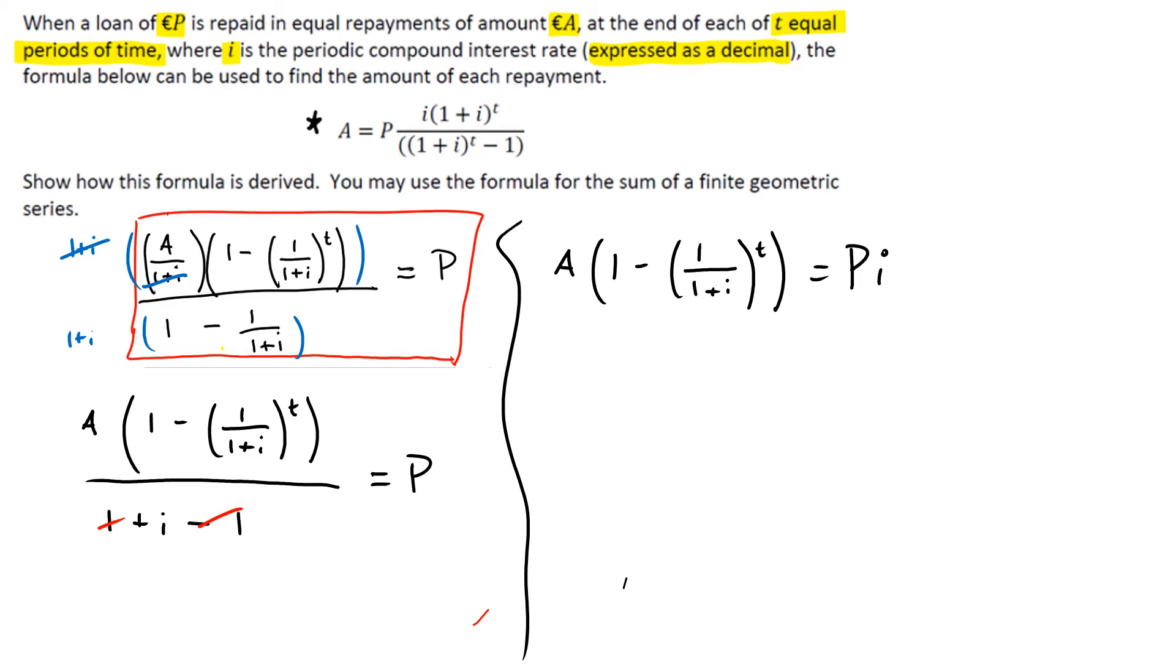So what we can do is A is equal to P times I divided by everything that was here beside A. So this whole bracket here. So we have 1 minus 1 over 1 plus I to the power of T.